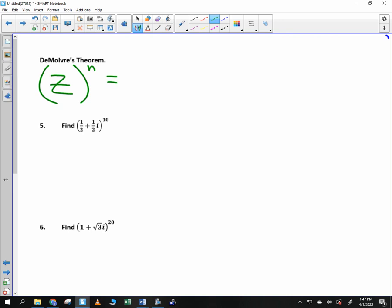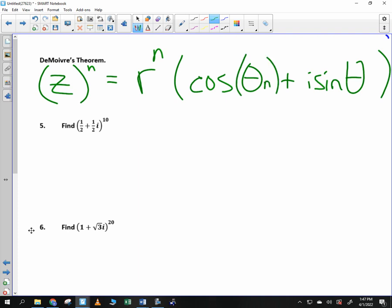De Moivre's theorem says the following. Suppose you want to take z and raise it to the n power. I'm going to take a complex number and raise it to the n power. Who can tell me what you think I do with r? Yes, you raise r to the n power. What do you think I do with the theta values? You multiply them by n. And that is De Moivre's theorem. And it allows us to do things that are absolutely remarkable.